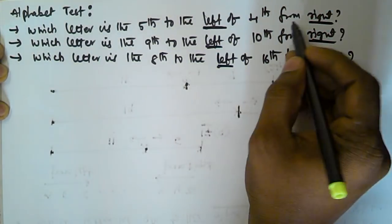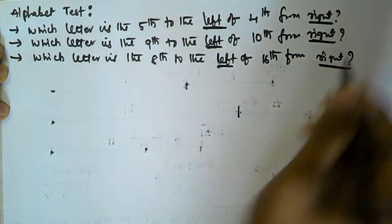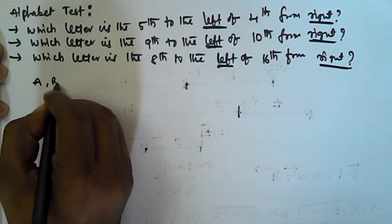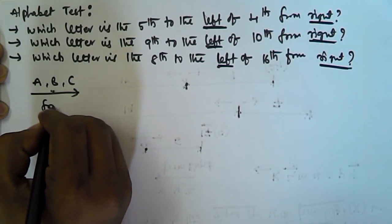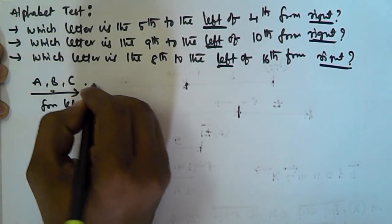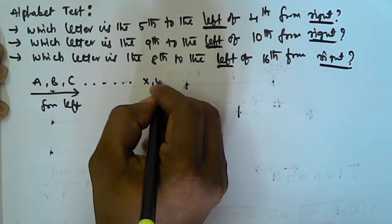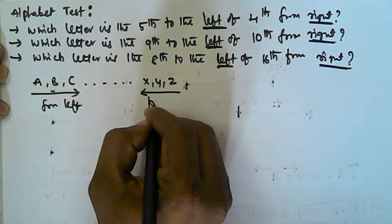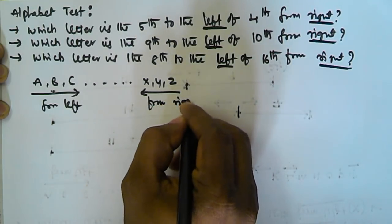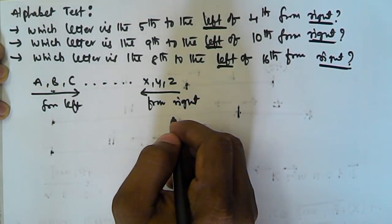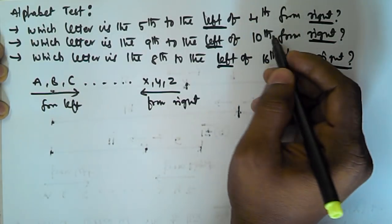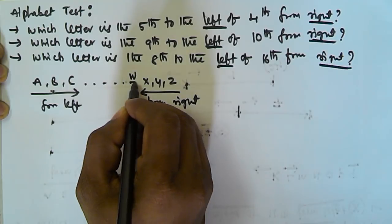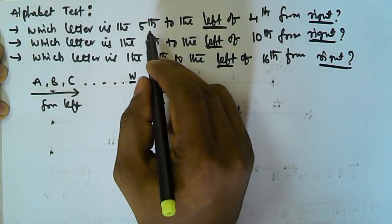Whenever you get these kinds of problems, you have to solve them like this. 'Fourth letter from the right' means we start from Z. If A, B, C is from the left, then at the end we have X, Y, Z. So counting from Z towards A is called 'from right.' The fourth from the right is W.